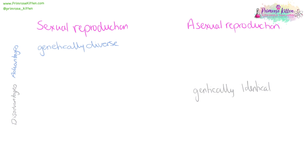An advantage of asexual reproduction is that there is only one parent, meaning that the plant or the animal doesn't have to wait around for a mate to turn up, whereas with sexual reproduction a mate is required. And sometimes this can be quite hard to find, especially in sparsely populated locations.